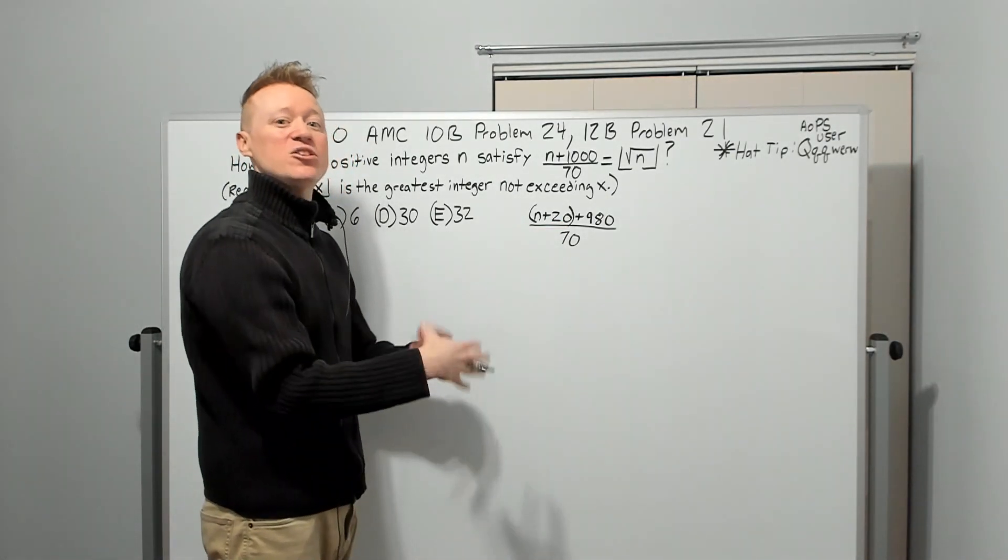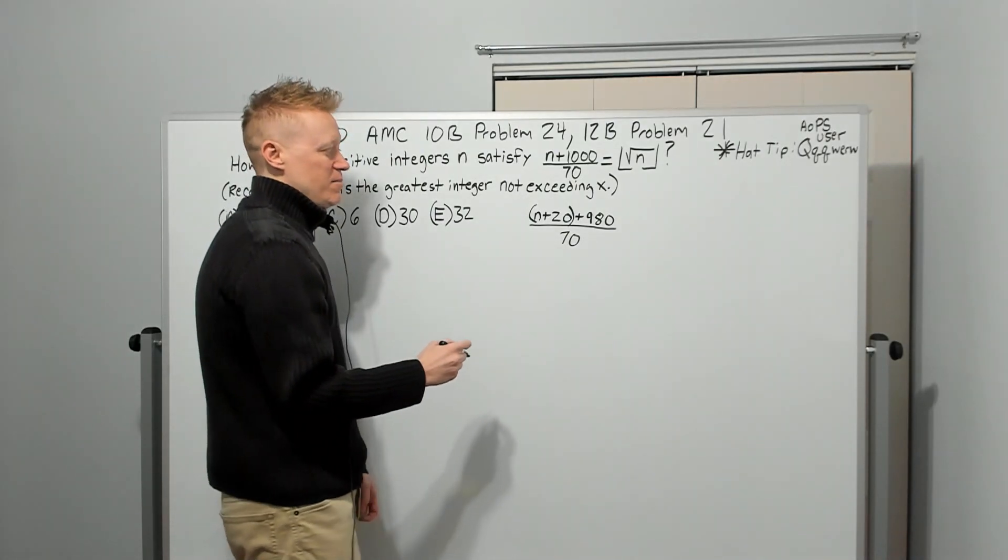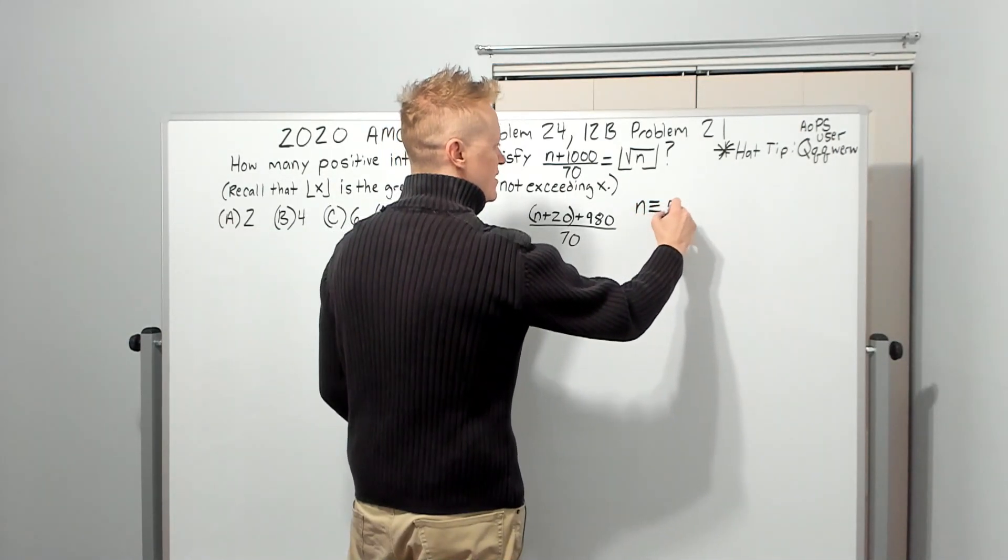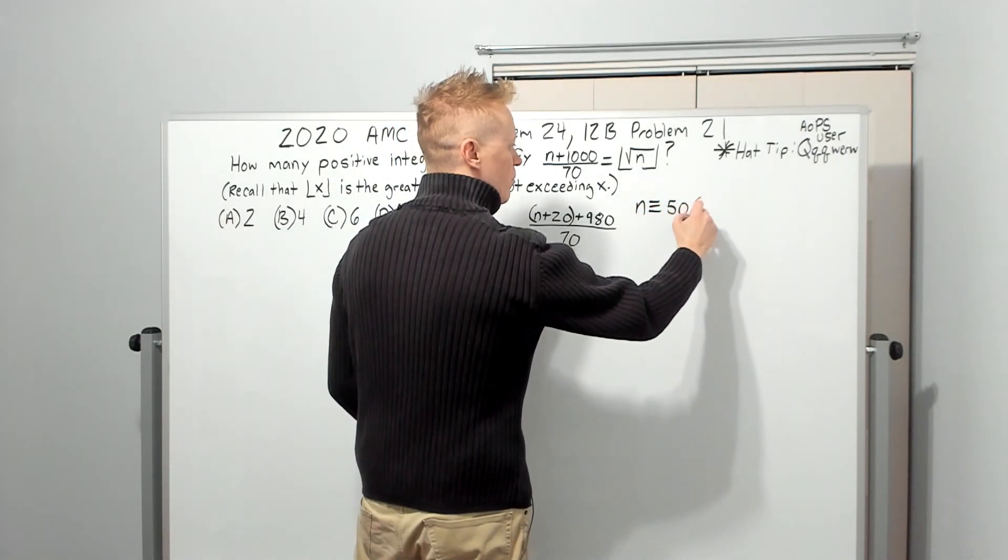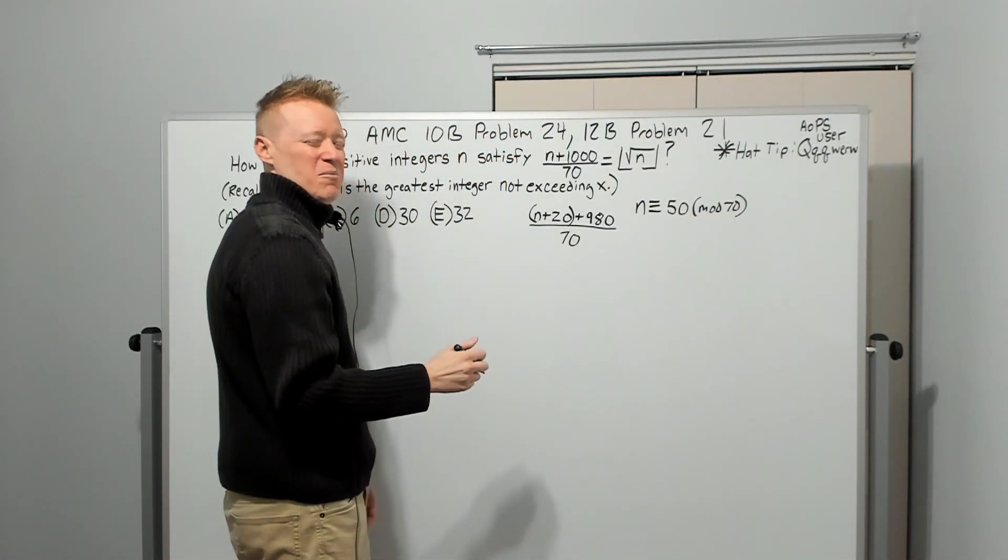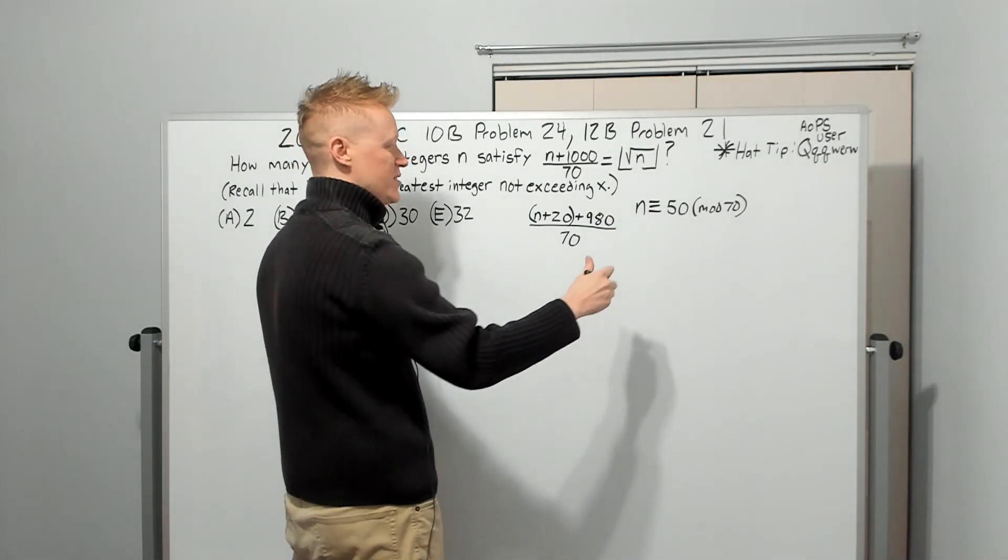This means that N needs to be a number that is 20 less than a multiple of 70. Okay. So that way, when I add 20 to it, it becomes a multiple of 70. In modular arithmetic, we would say that N is congruent to 50 mod 70. It would have a remainder of 50, right? But we don't need to go full modular arithmetic on this, but it's good to make these kinds of connections.